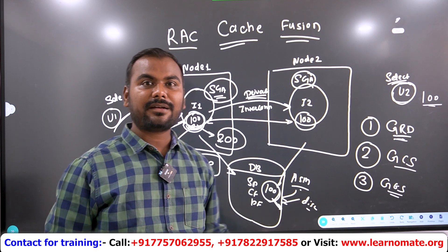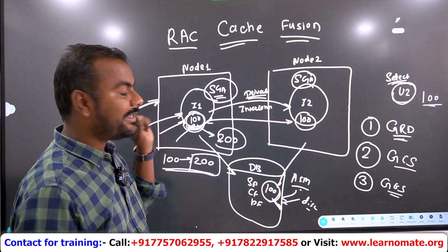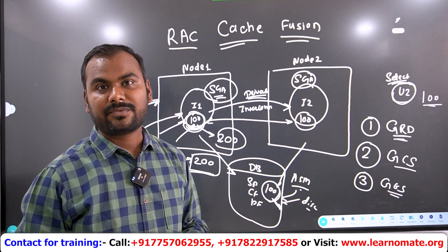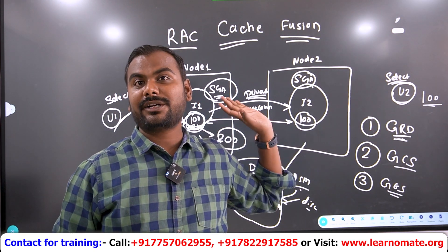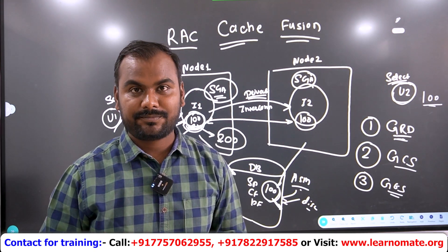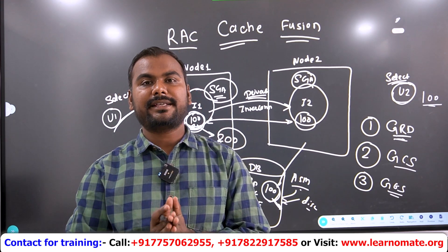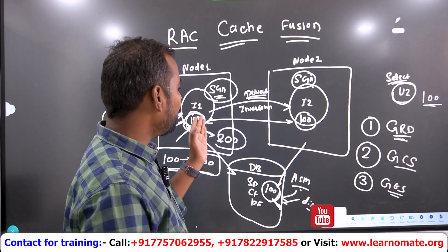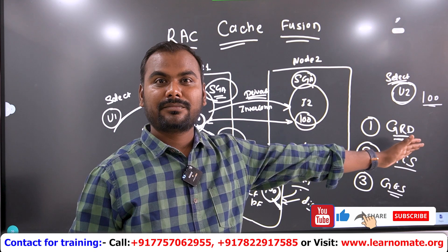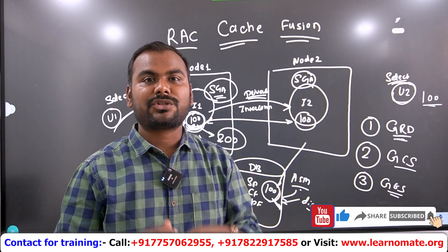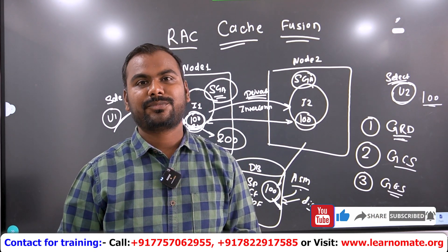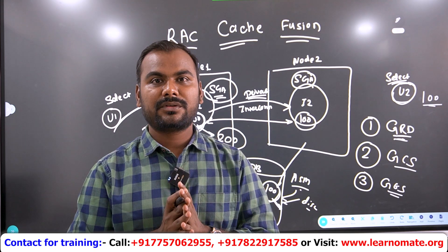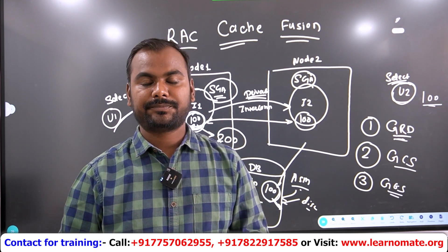This consistency is possible with the help of the GRD process, because the GRD knows which node is owning the block. Node 1 is owning the 100 and the changes have not been committed — they are not yet in the data file. So the second user should not get 200; otherwise that would be inconsistent data. In simple words, cache fusion is a concept mainly responsible for transferring data from one node to another — whether you have 2 nodes or N nodes — ensuring consistent data throughout the cluster.